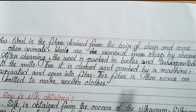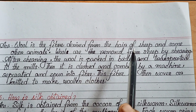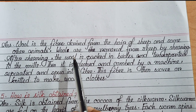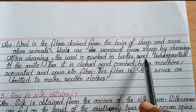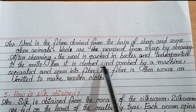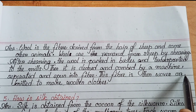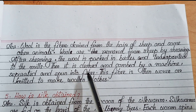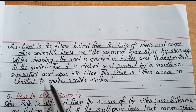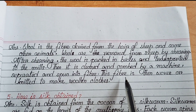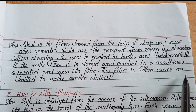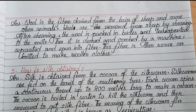Number 4: outline the process of making woolen clothes. Wool is the fiber derived from the hair of sheep and some other animals. Wool is removed from sheep by shearing. After shearing, the wool is packed in bales and transported to the mills. Then it is cleaned and combed by a machine, separated and spun into fiber. This fiber is then woven or knitted to make woolen clothes.